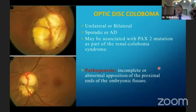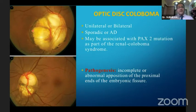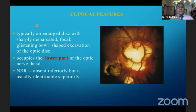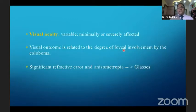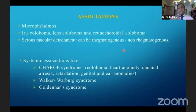Optic disc coloboma may be unilateral or bilateral, possibly associated with a PAX2 mutation. Pathogenesis is incomplete or abnormal opposition of the proximal ends of the embryonic fissure. Clinically, we have a typically enlarged disc with a sharply demarcated, focal, glistening bowl-shaped excavation occupying the lower part of the disc where fissure fusion would have occurred. The neural retinal rim is absent inferiorly but identifiable superiorly. Visual acuity is variable and minimally affected in most cases. Associations include micro-ophthalmia, other ocular colobomas, and systemic associations like CHARGE syndrome.